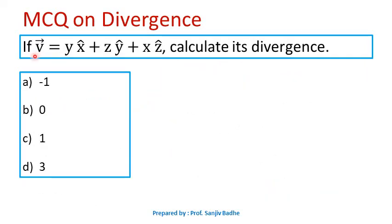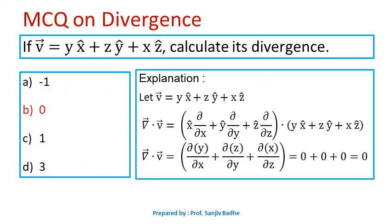Next question: if v-bar = y x-cap + z y-cap + x z-cap, calculate its divergence. Options are: a) -1, b) 0, c) 1, d) 3. To find divergence, we take the dot product of del operator with the given vector, giving del(y)/del(x) + del(z)/del(y) + del(x)/del(z). Differentiating y with respect to x gives 0, z with respect to y gives 0, and x with respect to z gives 0. Therefore divergence is 0, so option B is correct.